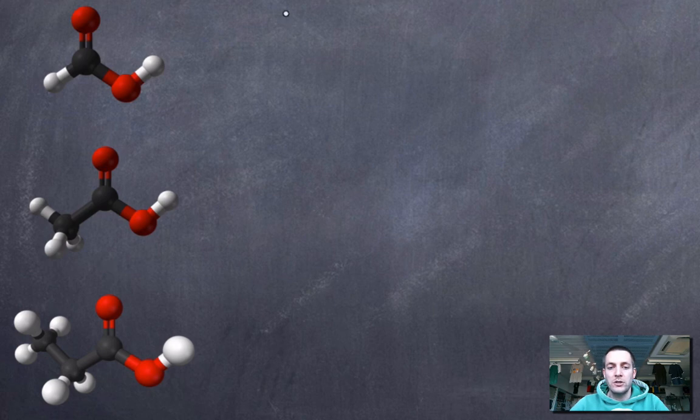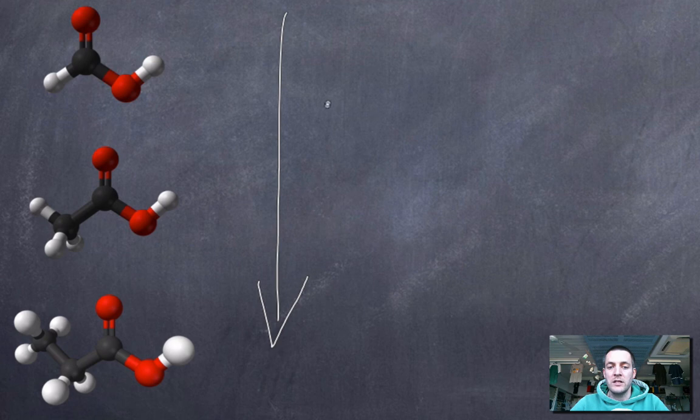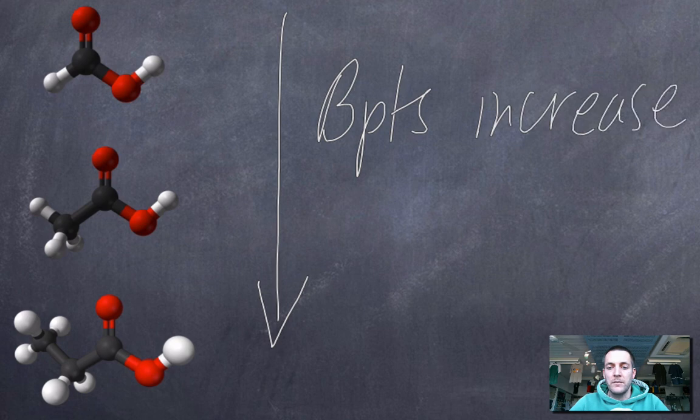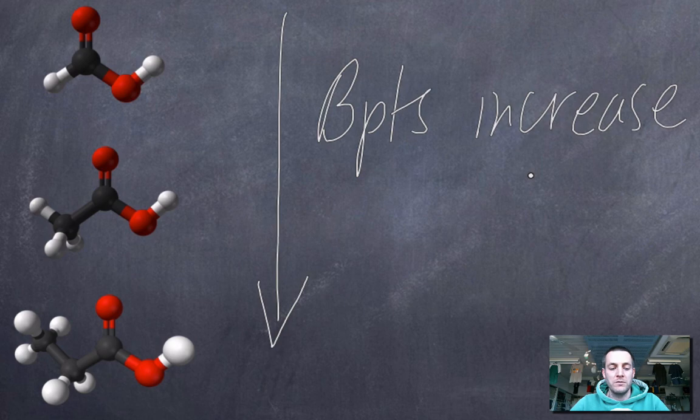And so we should notice that as we go down this particular series and as the chain length increases, that the boiling points will increase as the chain length gets longer. So that's a really important fact to know about basically all homologous series. As the molecules get bigger, their boiling points increase because their van der Waals forces get stronger.